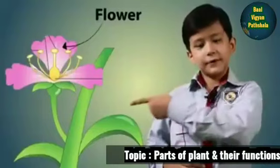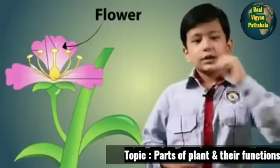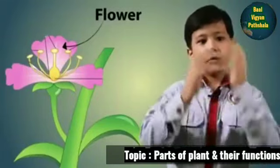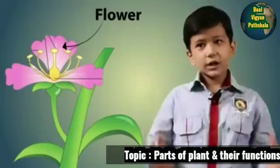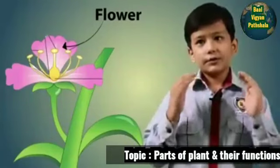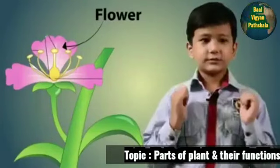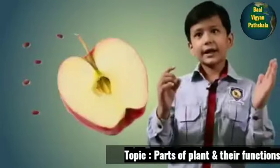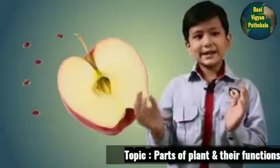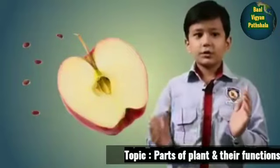The fourth part is flower. Flower is the most colorful part of the plant. Flower can make seed and fruit.